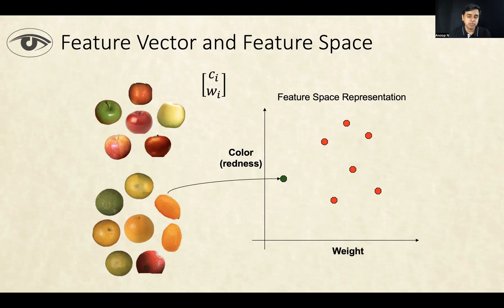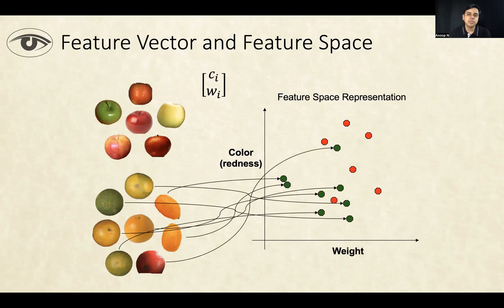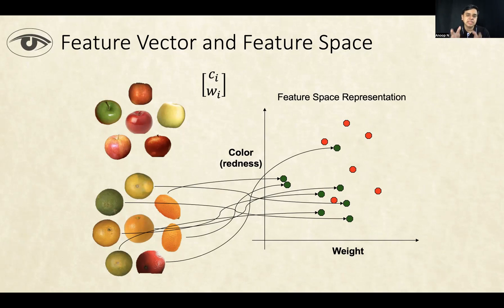Similarly, I can take an orange and map it to a point in the feature space by computing the corresponding color and weight, and I can do it for all the samples. All the green samples here belong to oranges. So you can think of the color of the dot in this example as the label of that particular sample — that is, whether that sample is an apple or an orange. This is a set of points or feature vectors that exist in the feature space.